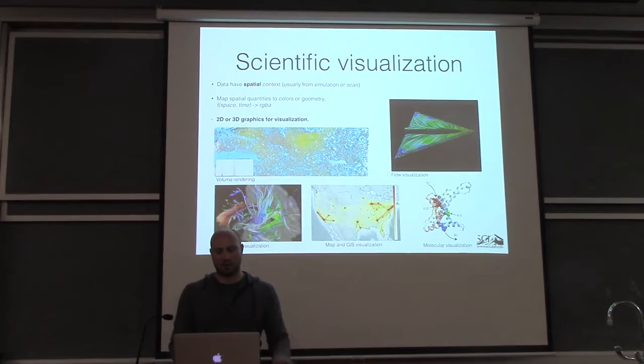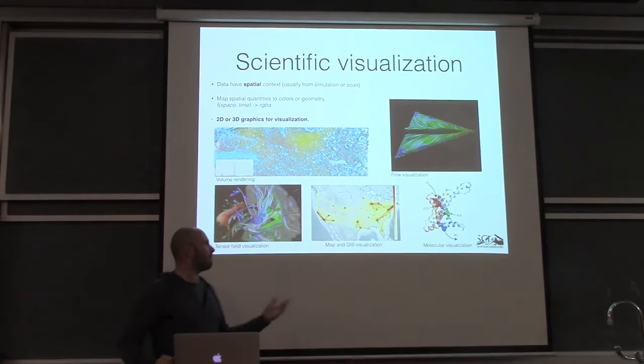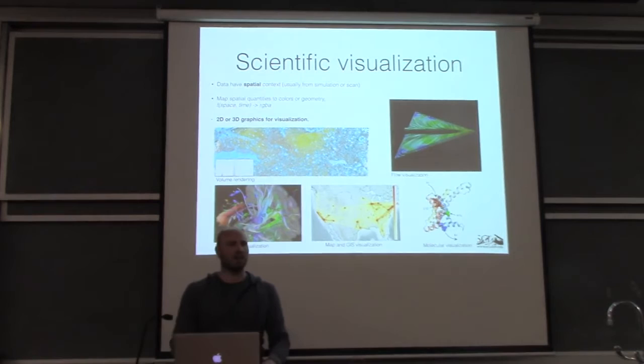Usually you'll have a field or a collection of fields over space and time. You call this field F, and you're mapping this to some color at the end of the day — red, green, blue, and alpha channels. These are all standard concepts in graphics, but this is really the turf of scientific or spatial visualization. This is really 2D or 3D graphics for viz.